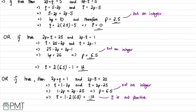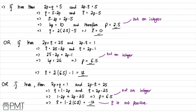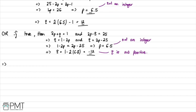In all cases, there are no integer solutions: P = 2.5, P = 6.5, and P = 6.5. We have reached a contradiction. Therefore, this is a contradiction as there are no integer solutions. Hence, there are no positive integers P and Q such that 4P squared minus Q squared is equal to 25.